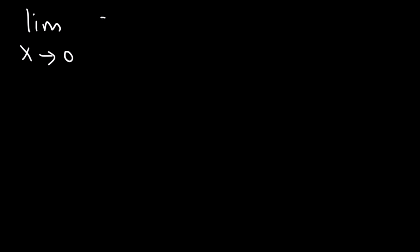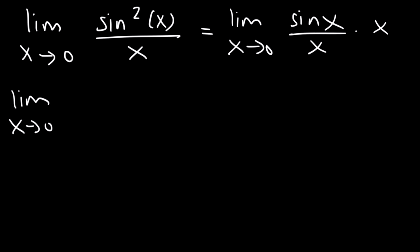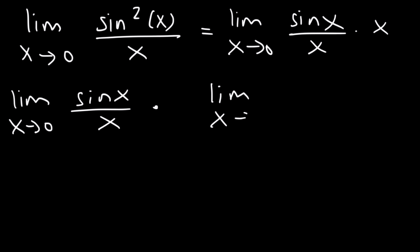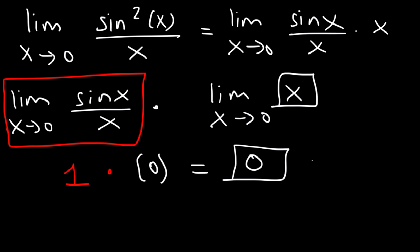What is the limit as x approaches 0 of sine squared x divided by x? Sine squared is sine x times sine x, so we have sine x over x times sine x. Separating into two limits: the limit as x approaches 0 of sine x divided by x equals 1, and the limit as x approaches 0 of x equals 0 by direct substitution. So 1 times 0 is 0.